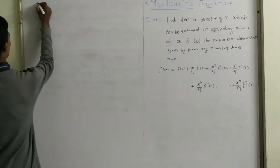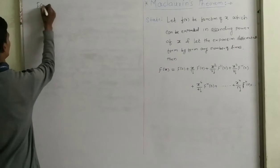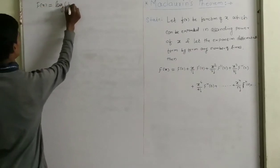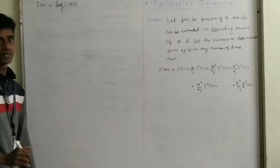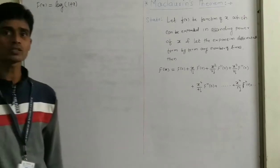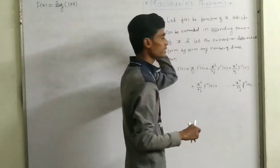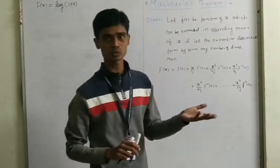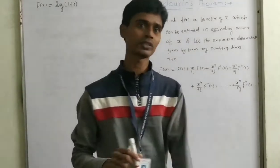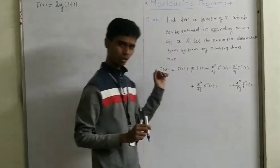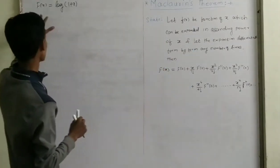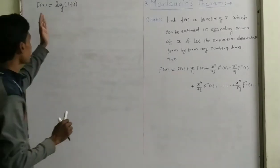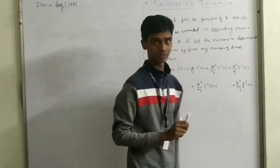So here we find out today: find out the expansion of f(x) = log(1+x). So the function is log(1+x), and obviously we are using the Maclaurin theorem. So I am writing down the Maclaurin theorem. The question is: find the expansion of f(x) = log(1+x). So how to find out this? Using the Maclaurin theorem.